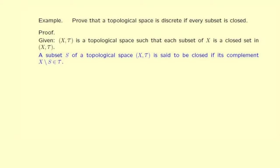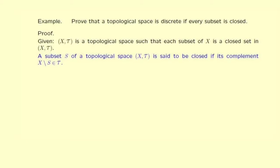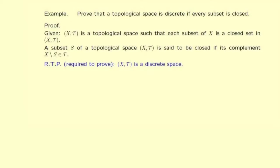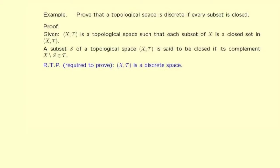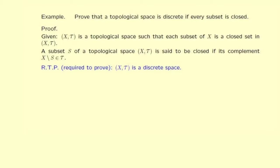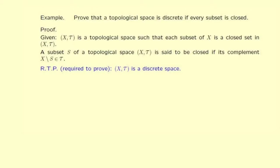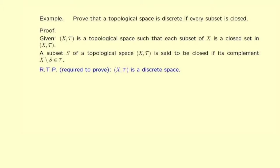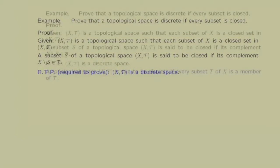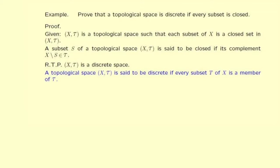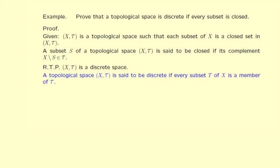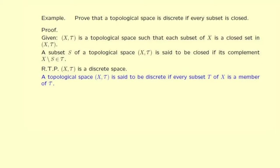Step 3: Write down what we are required to prove. Step 4: Write down the definition of each technical term in what we are required to prove. The technical term is 'discrete space.' A topological space (X, τ) is said to be discrete if every subset T of X is a member of τ.